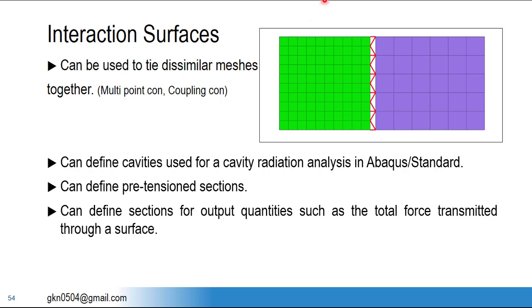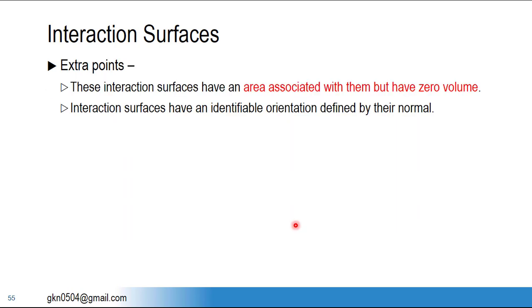We can define sections on interaction surfaces and use those sections to define output requests. For example, if I want output between two components, I define a contact surface and request output on that interaction surface. An important note: area is associated with interaction surfaces but the total volume of interaction surfaces is zero in general, unless you specifically define a thickness for the contact surfaces.